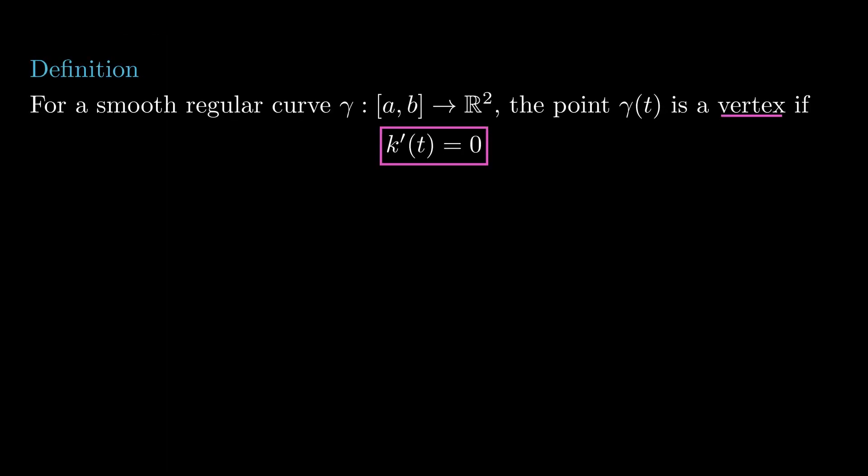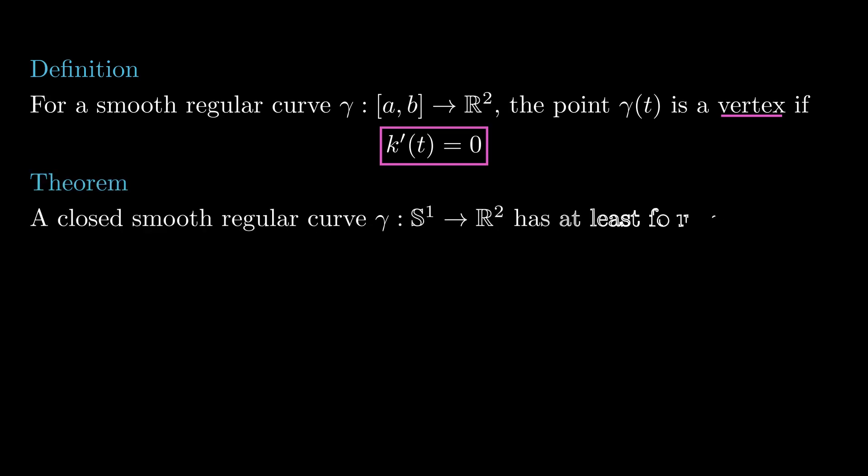With this lemma we just proved, we could give a quick proof of a classic theorem of differential geometry, the four-vertex theorem. A vertex of a plain smooth regular curve is defined to be a critical point of its curvature, that is, a point where k prime is 0.